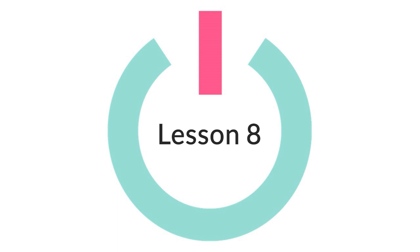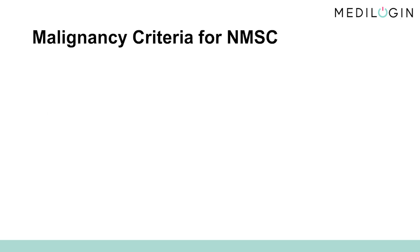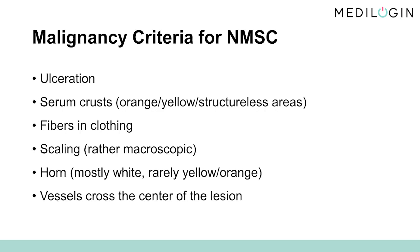Lesson 8: Squamous cell carcinoma and actinic keratosis. In this lesson, we deal with the dermatoscopic criteria of squamous cell carcinoma and its precancerous stage, actinic keratosis. We will interpret typical image examples together. In principle, the dermatoscopic criteria for unpigmented malignant lesions also apply to squamous cell carcinoma and actinic keratosis. To review, let's briefly summarize these characteristics from Lesson 6: ulceration, serous crusts, clothing fibers as an indirect sign of ulcerations, scalene, horn, and vessels crossing the center of the lesion. Let us now turn our attention to these specific criteria.